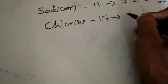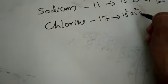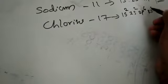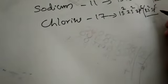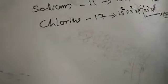Whereas, when it comes to chlorine, its configuration is 1s2, 2s2, 2p6, 3s2, 3p5. The last shell has 7 electrons and needs one more electron to get stability.